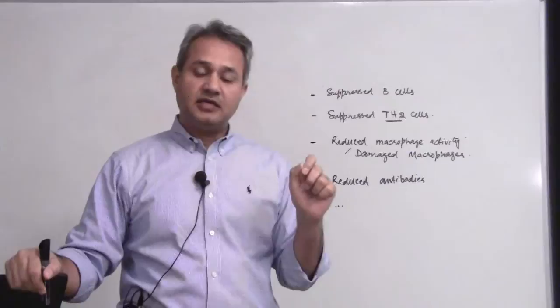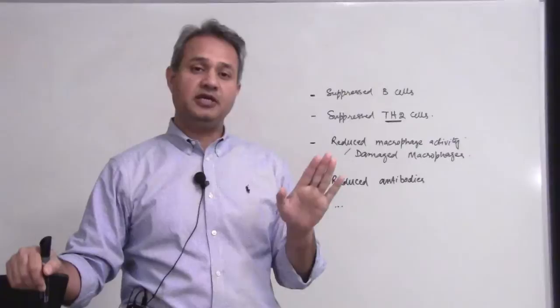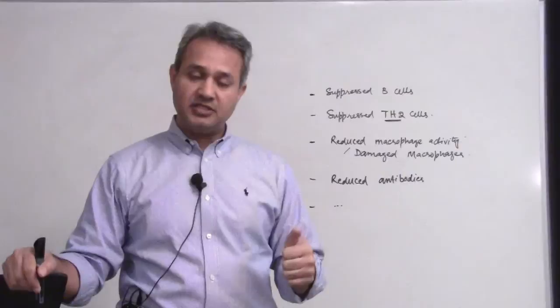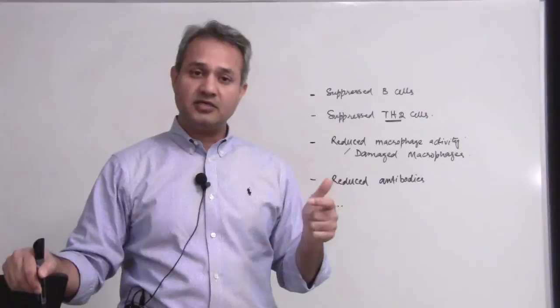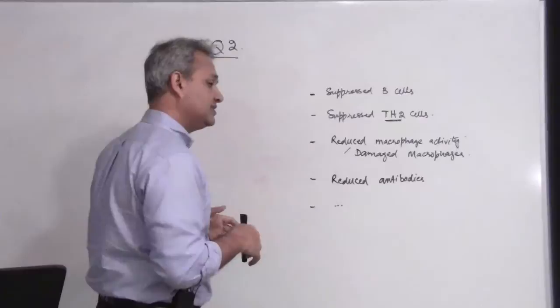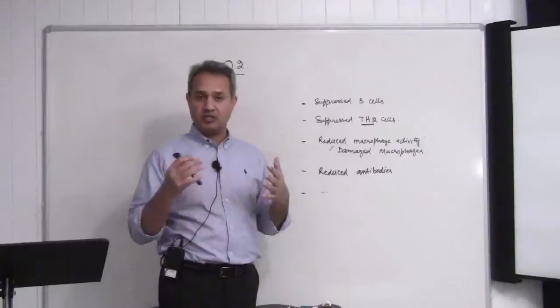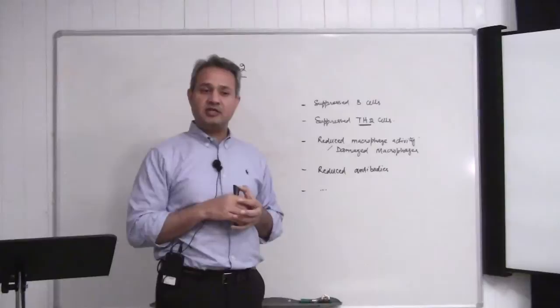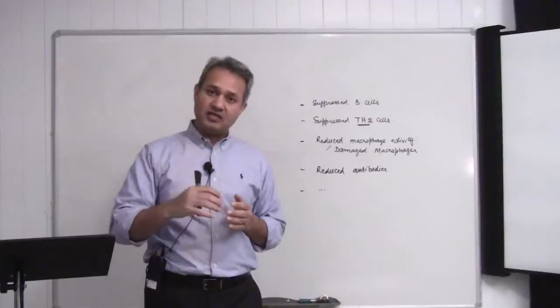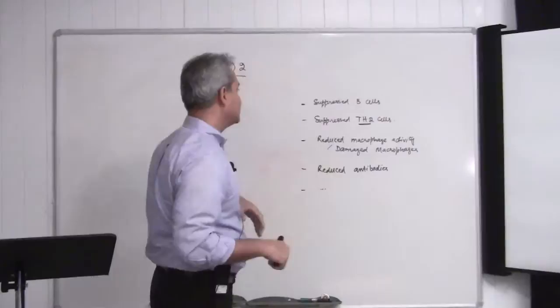The question is: why is it the case that patients with silicosis show a greater susceptibility to tuberculosis? It is seen that silicosis patients develop tuberculosis more easily than other people who are exposed to Mycobacterium tuberculosis. Additionally, when autopsies are done on patients with silicosis, sometimes subclinical Mycobacterium tuberculosis or tuberculosis signs are found. So the question is why is that happening, and here are some choices.